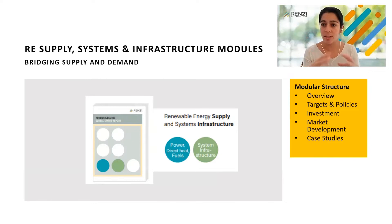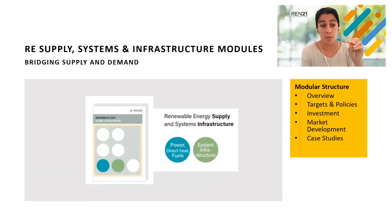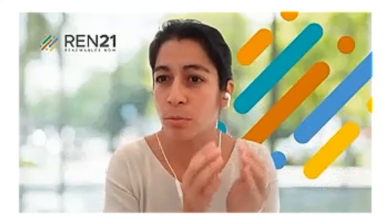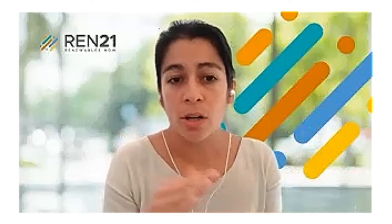We will also try to give a global systemic view of renewable energy demand, where we're going to present the supply and the systems and infrastructure needed for an uptake of renewables. We will publish a power, direct heat, and fuels module — similar to what the market and industry chapter was in the past — and we'll continue tracking how the system and infrastructure is changing to accept the uptake of renewables.